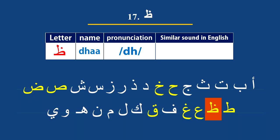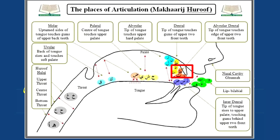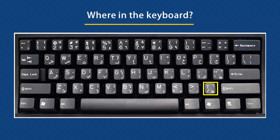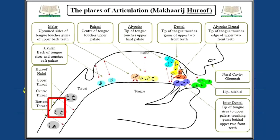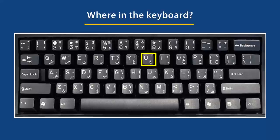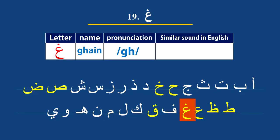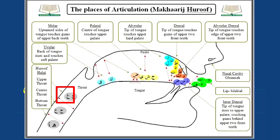Dha (ظ) has the sound of 'dh' and has no English equivalent. Its place of articulation is alveolar dental — the tip of the tongue touches the edges of the upper two front teeth. It is found on the question mark key. Ain (ع) also has no English equivalent; it has the sound 'a' pronounced with the center throat. Notice it is not a regular 'a' — it is a distinct sound. Ain is on the U key. Ghain (غ) also has no English equivalent; it sounds like a guttural 'gh' made by the upper throat. Ghain is on the backtick/tilde key.